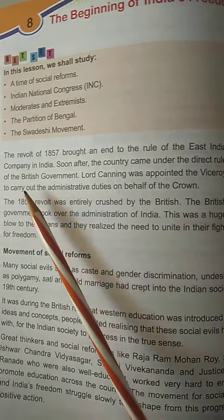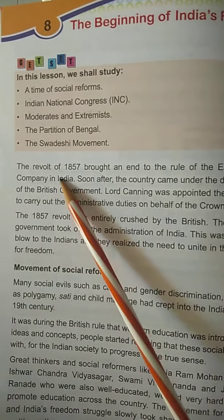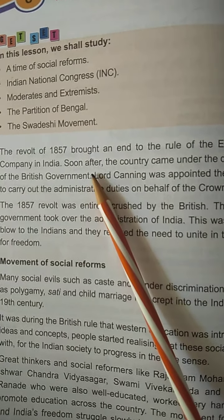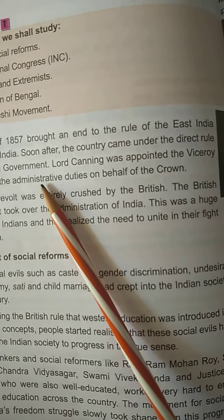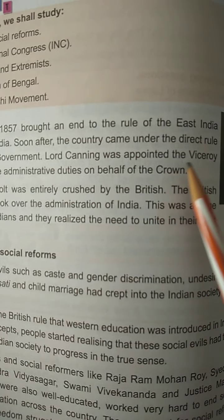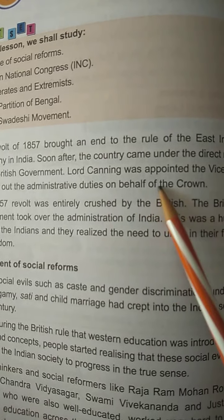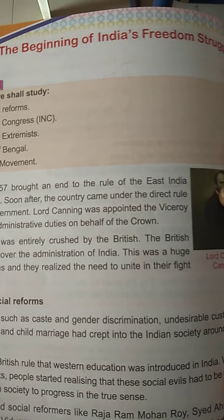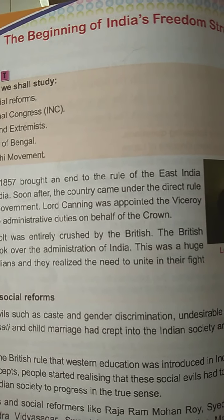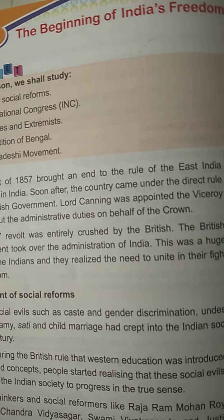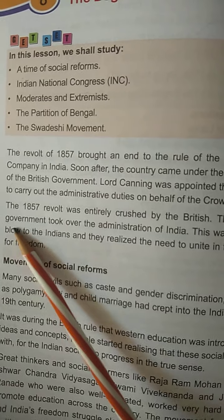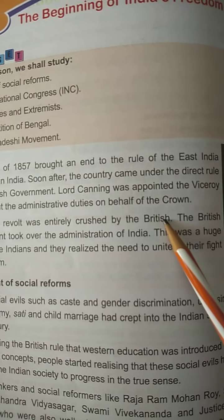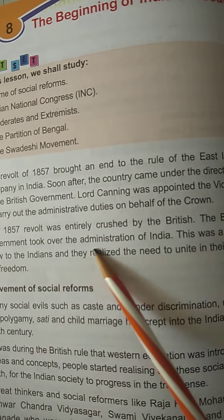Soon after, the country came under the direct rule of the British government. So the last lesson was the revolt of 1857, at which time the East India Company's rule ended. Lord Canning was appointed as the Viceroy to carry out the administrative duties on behalf of the crown, and the British government took over the administration of India.